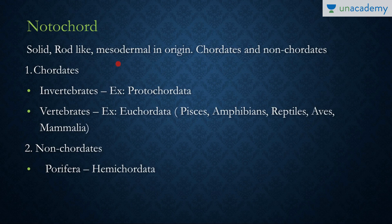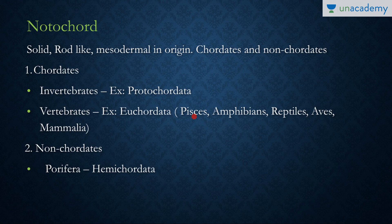The notochord is basically a solid rod-like mesodermal structure that differentiates organisms into chordates and non-chordates. Among chordates, there are two types: invertebrates and vertebrates. In invertebrate chordates, the notochord is persistent and not replaced by the vertebral column — all protochordates like cephalochordates and urochordates fall into this category.